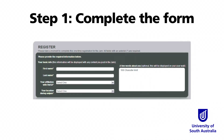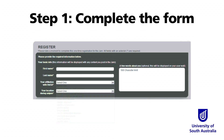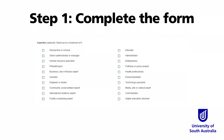The online form takes about two minutes to complete. To start, fill in your first and last name in the fields provided. Your name, affiliation with UniSA, your location during UniJam, along with the expertise selections you choose to describe yourself, will be displayed to others in the live UniJam event.